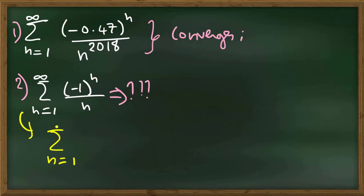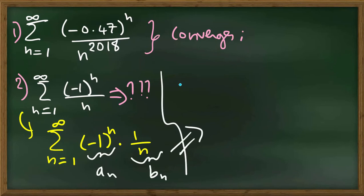We can rewrite this series as minus 1 to the power n times 1 over n. And call this a_n and this b_n.